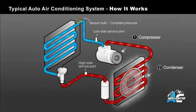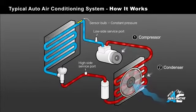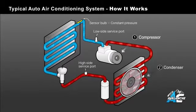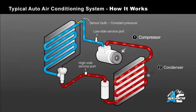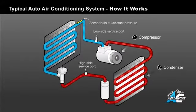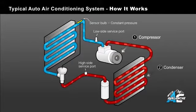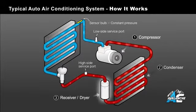The condenser does just that. Cool air flows across the condenser, cooling the high pressure, high temperature gas, turning it into a high pressure liquid. As you can see, the gas remains red, high pressure, but changes to arrows indicating it's changed to a liquid.